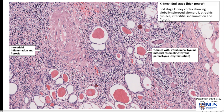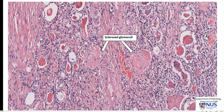The other feature that we see is the presence of chronic inflammation in the interstitium, which is also part and parcel of chronic pyelonephritis. Occasionally we can have acute on chronic pyelonephritis, and there may be a component of acute inflammation as well. The glomeruli also may be sclerosed, as we see here, and again we see a lot of chronic inflammation in the interstitium.